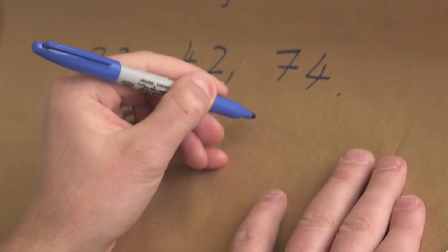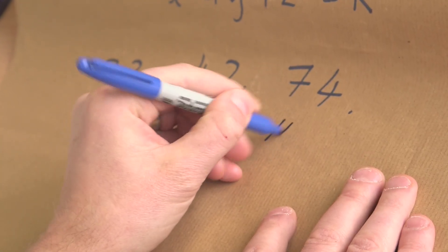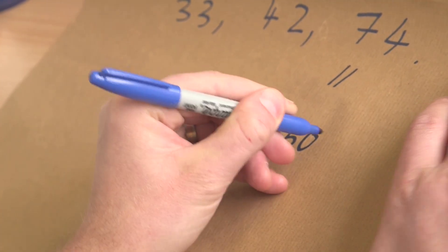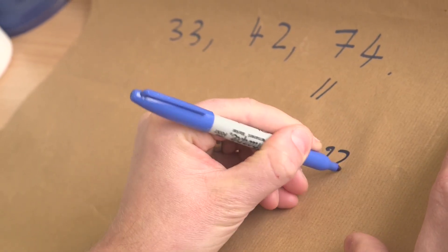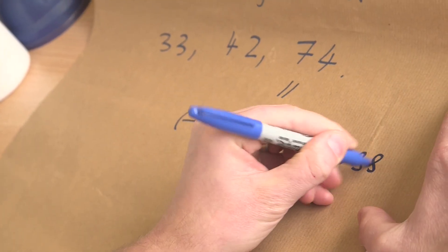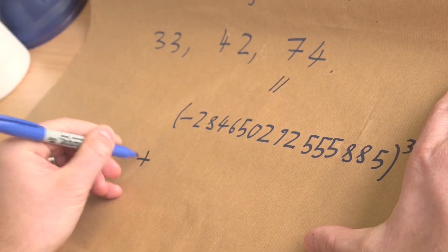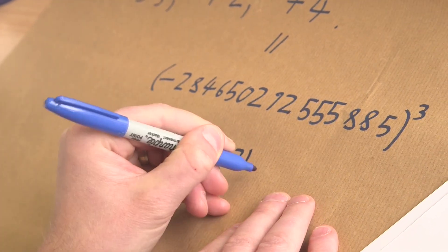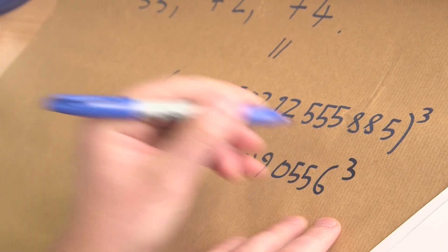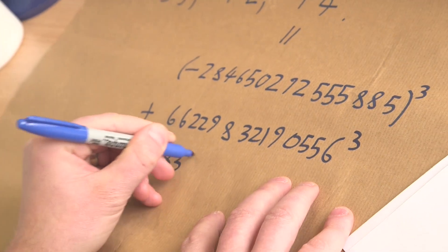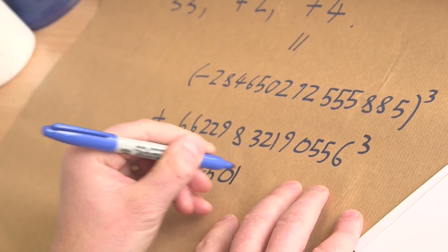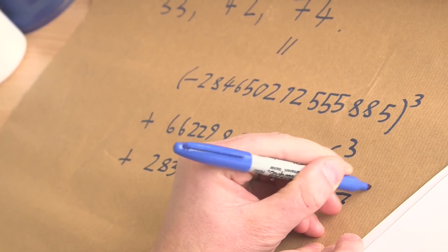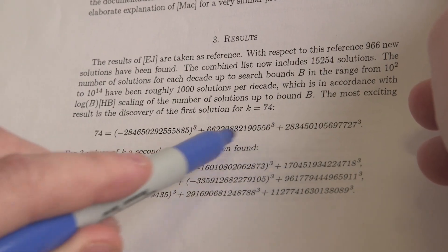Now we know that this last number here, 74, is actually represented as a sum of three cubes. Do you want me to write it down for you? Of course. So here we go: 74 is now known to be equal to minus 284650292555885 cubed plus 66229832190556 cubed plus 2834501056977727 cubed. And there's the new solution.